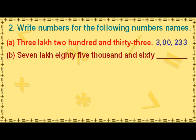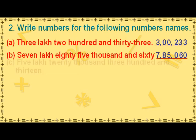The next number will be written as: the digit 7 in the lakhs place value, the digit 8 in the ten thousands place value, the digit 5 in the thousands place value, the digit 0 in the hundreds place value, the digit 6 in the tens place value, and the digit 0 in the ones place value.